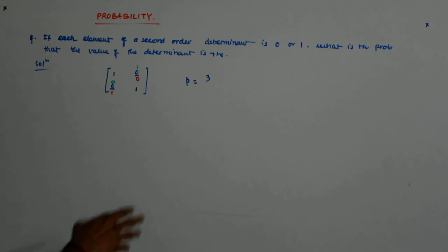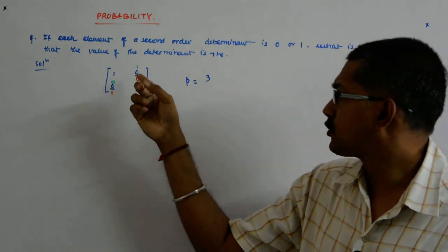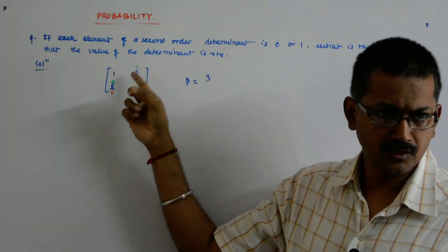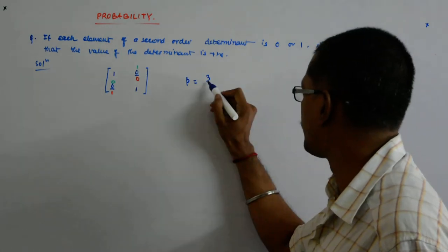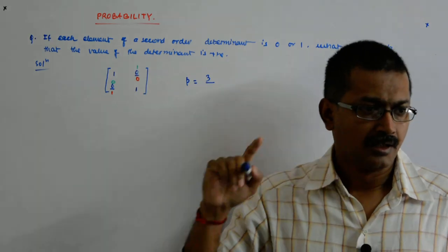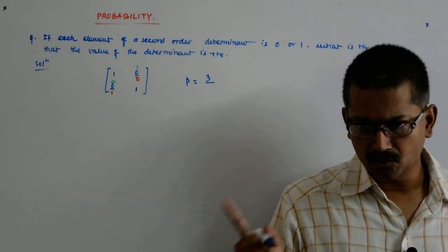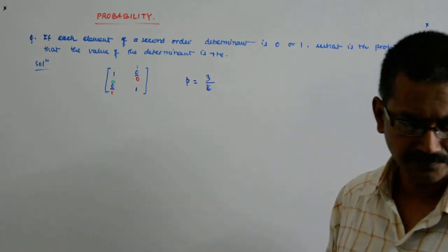So that is 3, and in total, how many ways can you juggle it? In any way, you can put 2 into 2 into 2 into 2. So 2 to the power of 4, that is 16. So it has to be divided by the total number of ways in which you can form a determinant whose elements are either 0 or 1, which is 16. So the answer is 3 by 16.